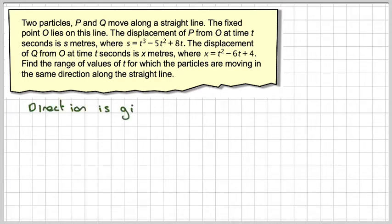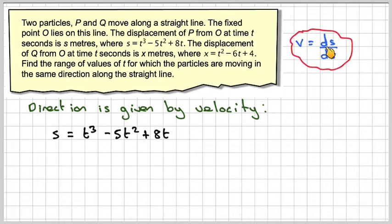Direction is actually given by velocity. So we'll need to find the velocity function for these two displacement functions. We've got s is t cubed minus 5t squared plus 8t, and you get velocity by differentiating the displacement function. So differentiating, that will become 3t squared minus 10t plus 8.